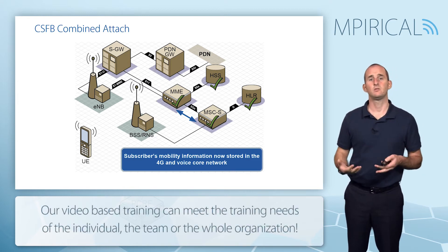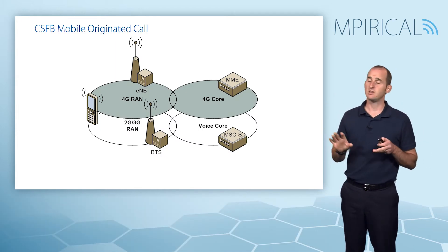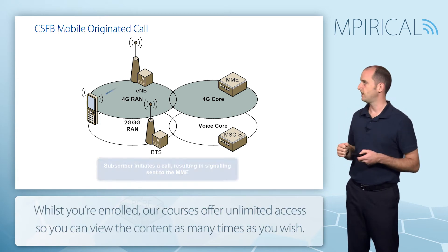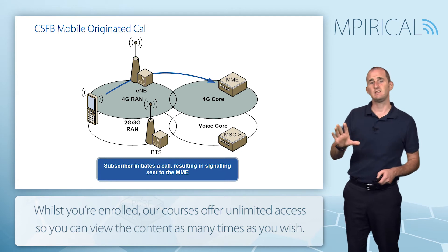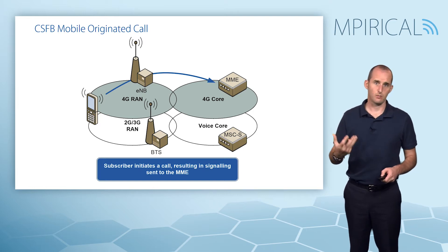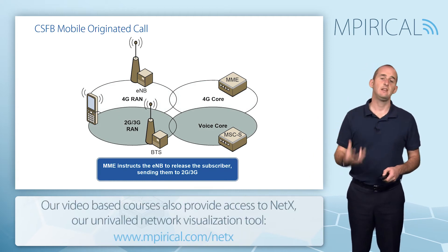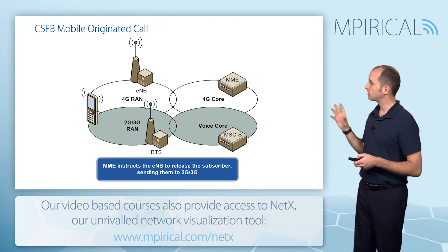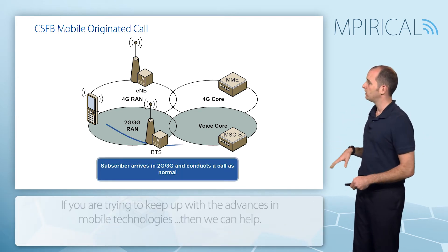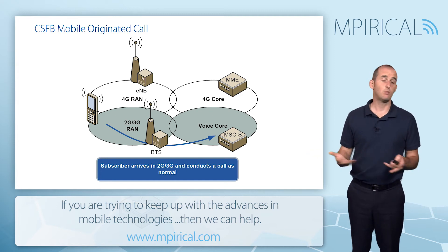Looking at a circuit switch fallback mobile originated call, the subscriber is attached to the 4G network and a call is initiated by sending signaling to the MME. The MME analyzes that signaling, realizes a circuit switch fallback call has been initiated, and instructs the eNodeB to release the subscriber. At that point the subscriber is sent to 2G or 3G. Once they arrive in the 2G or 3G network, the call is conducted as normal — a routine 2G or 3G mobile originated call procedure.